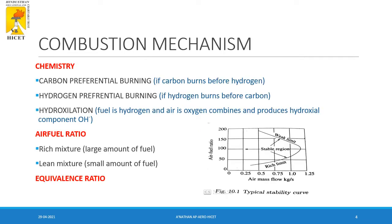In combustion chemistry, carbon burns before hydrogen in the fuel — this is known as carbon preferential burning. If hydrogen burns before carbon, it is hydrogen preferential burning. When hydrogen and oxygen combine, they produce a hydroxyl compound, and that process is known as hydroxylation.